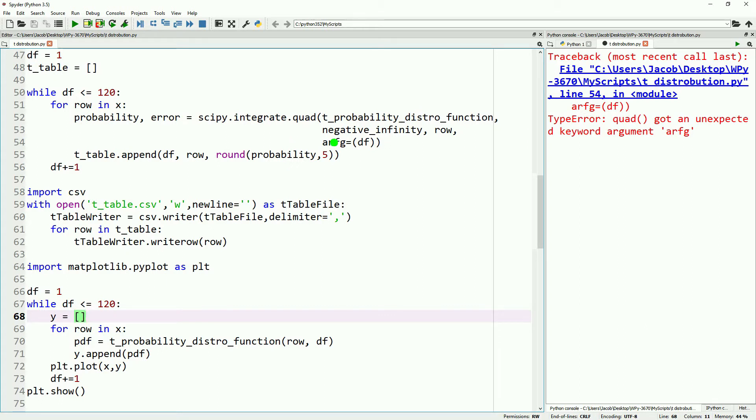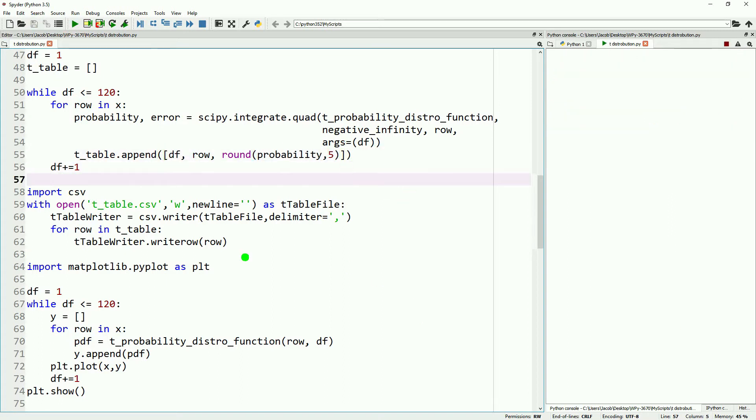Looks like we have an error. We want args not arfg. Try to run that again. Now it looks like we need to encapsulate our row with a list. Hit save and run one more time. We'll speed through this as it processes. This is a lot more than our z distribution, so this will take some time.